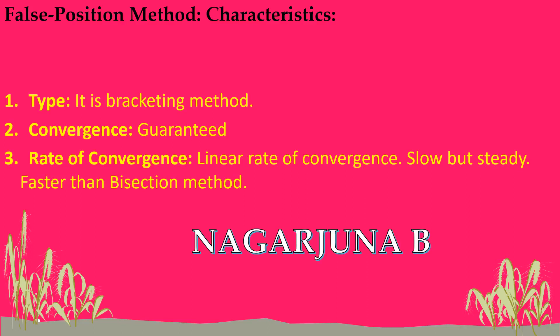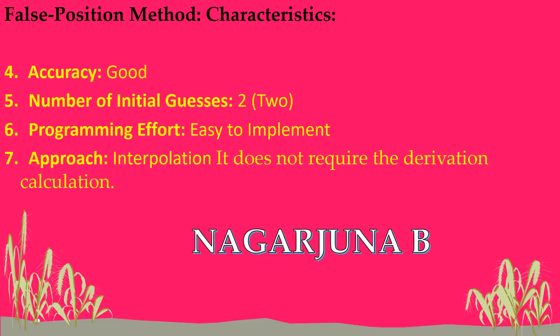The third characteristic is rate of convergence: linear rate of convergence — slow but steady, and faster than the bisection method. The convergence is linear; the method takes more time but is steady. It is faster compared to the bisection method. In bisection we may need nine, ten, or even eleven iterations, whereas in the Regula Falsi method you get the answer within five, six, or at most seven iterations.